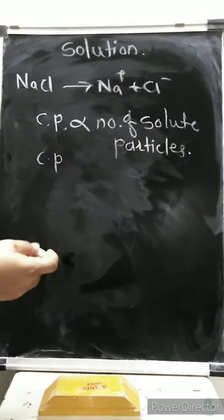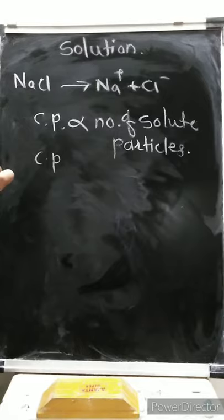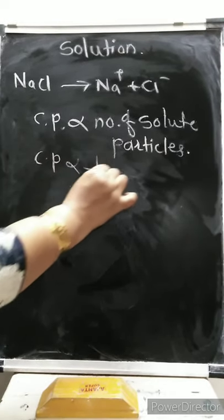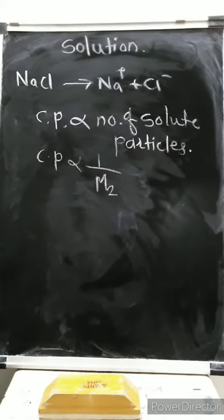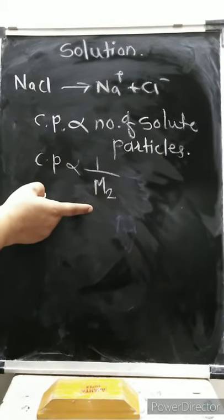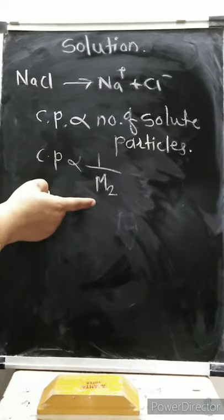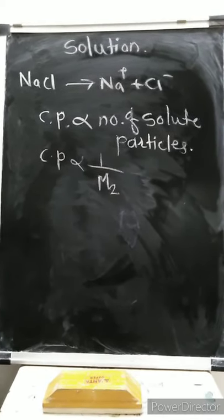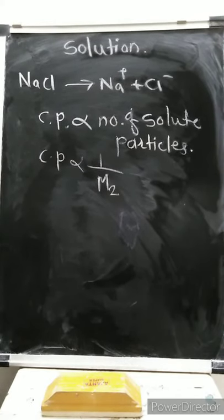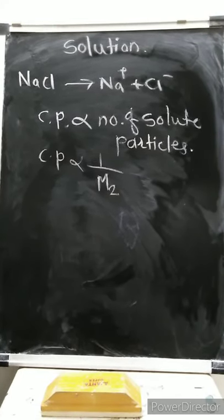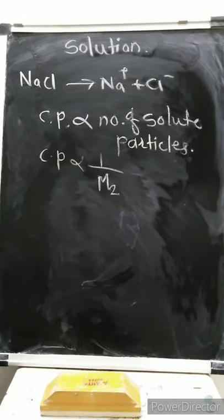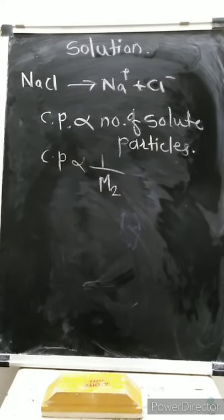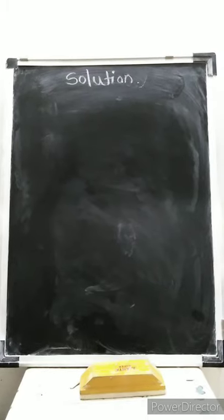Colligative properties increase because they are directly proportional to the number of particles, and not to their nature. These properties are inversely proportional to the molar mass of a solute. So after dissociation of an electrolyte, colligative properties increase, but the molar mass of that electrolyte decreases. For electrolyte solution, the observed molecular mass is found to be less than for non-electrolyte.